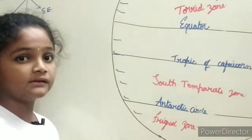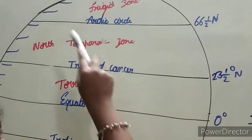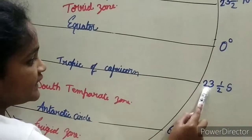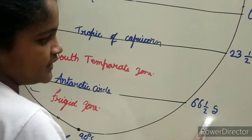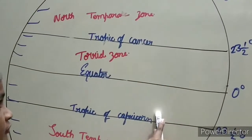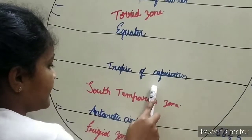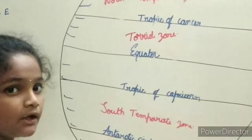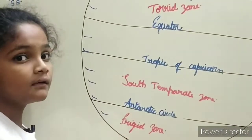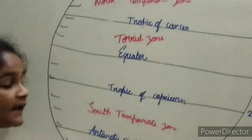To recap: Zero degrees is the Equator. 23 and a half degrees north is the Tropic of Cancer. 66 and a half degrees north is the Arctic Circle. 90 degrees north is the North Pole. 23 and a half degrees south is the Tropic of Capricorn. 66 and a half degrees south is the Antarctic Circle. 90 degrees south is the South Pole. Tropic of Cancer to Tropic of Capricorn is the Torrid Zone, which receives much heat. Arctic Circle to Tropic of Cancer and Tropic of Capricorn to Antarctic Circle is the Temperate Zone — no cold or no extreme heat. Arctic Circle to North Pole and Antarctic Circle to South Pole are the Freezy Zones, which receive very less heat and are very cold.